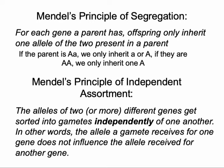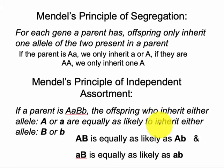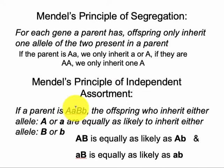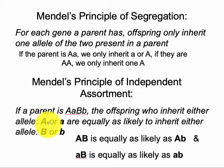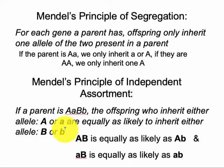So let's say a parent is heterozygous for gene A and heterozygous for gene B — that is, they have a dominant and a recessive allele for gene A and a dominant and a recessive allele for gene B. Their offspring, because of the principle of segregation, will only get one version of gene A and will only get one version of gene B from this parent. They are equally likely to get either the dominant or the recessive version for gene A, or the dominant or the recessive allele for gene B.